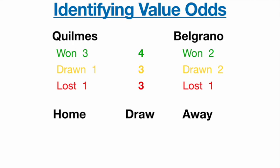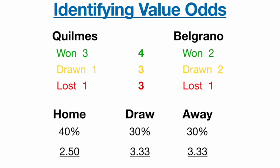The numbers we're looking at are four home wins, three draws, and three away wins — out of ten total games. Converting those into percentages gives us 40% home win, 30% draw, and 30% away win. Converting those into decimal odds, we get 2.50 for the home win, 3.33 for the draw, and 3.33 for the away win. That's what we're identifying as our value odds.